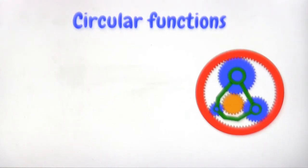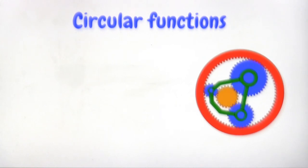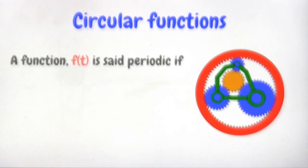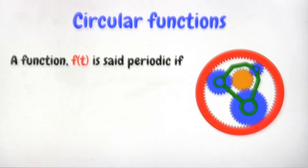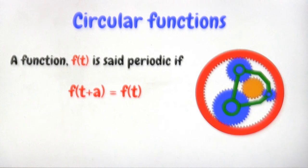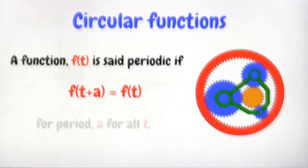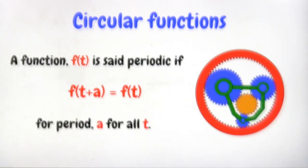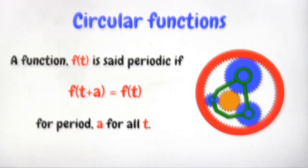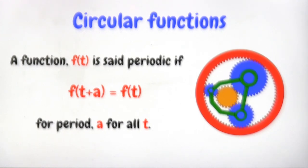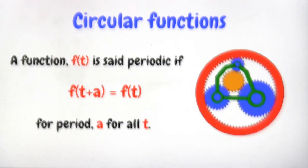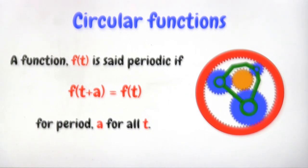So what is a circular function? A function f(t) is said to be periodic if f(t + a) equals f(t) for all t. Basically, that's how you relate a circular function with its characteristic.